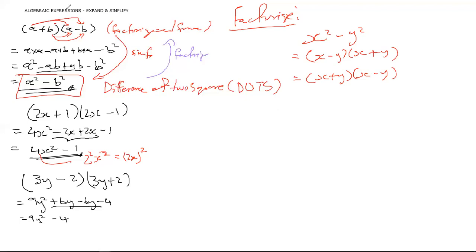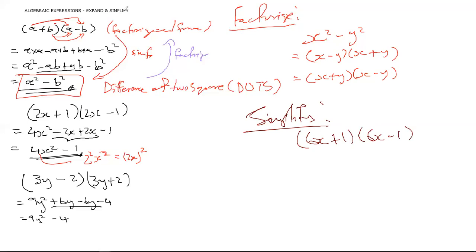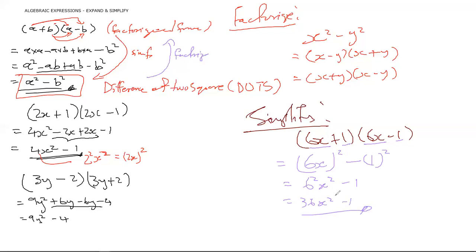Now let's take a twist and simplify. Suppose they give you (6x + 1)(6x − 1). The moment you realize the terms are the same in both brackets with different signs, you know this equals (6x)² minus 1², which gives 6² times x² minus 1, which is 36x² minus 1.